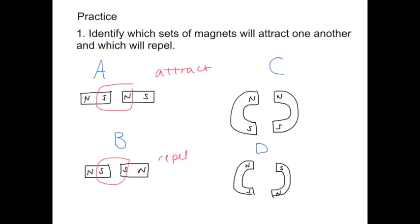So as you can see with C, we have two norths and two souths in contact with one another. This means the magnets will repel.